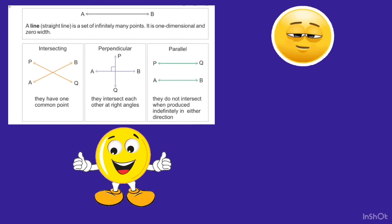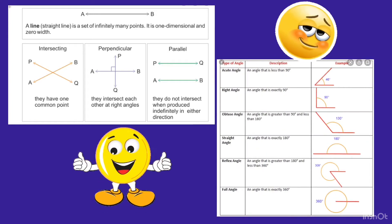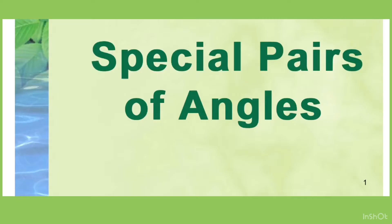We have also learned about different types of angles: acute angle, obtuse angle, right angle, straight angle, reflex angle, and complete angle.